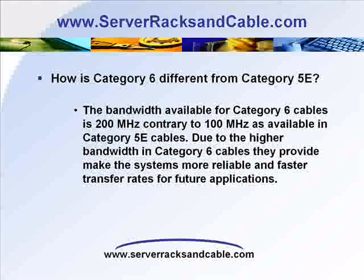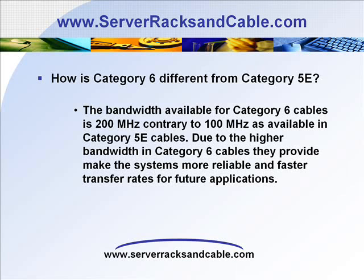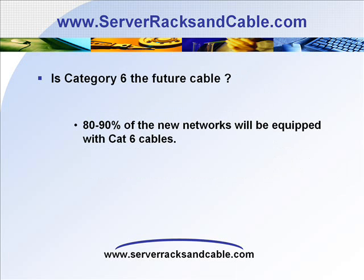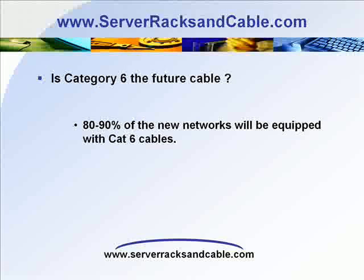Due to the higher bandwidth in Category 6 cables, they provide systems more reliable and faster transfer rates for future applications. Category 6 indeed is a future cable. As predicted by analysts and autonomous polls conducted, polls show that around 80–90% of new networks will be equipped with Cat 6 cables. The best part of Category 6, which favors its installation, is that it is backward-compatible with Cat 5 and Cat 5E cables, allowing users to supersede their Category 5E networks with Category 6 networks.